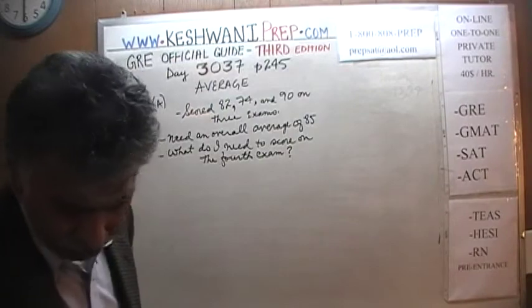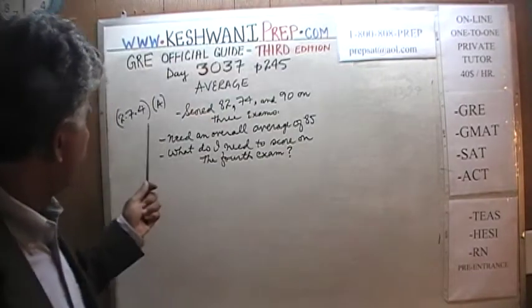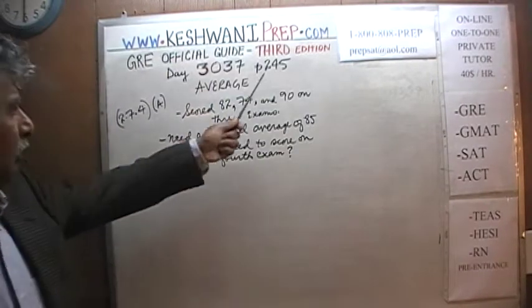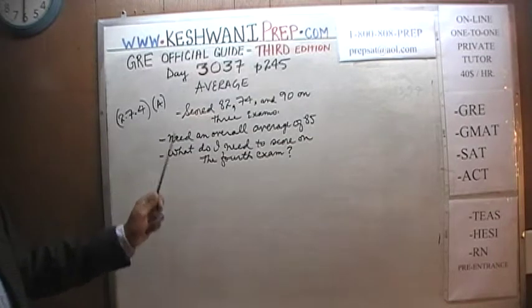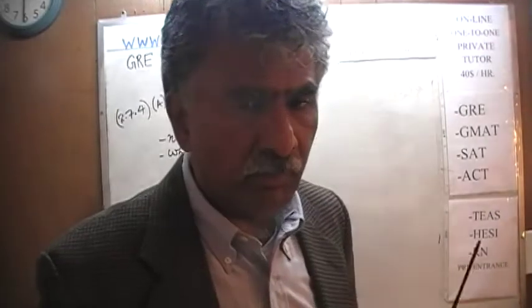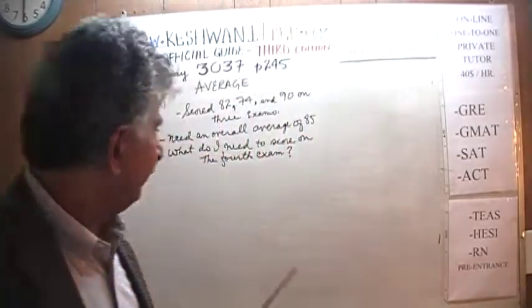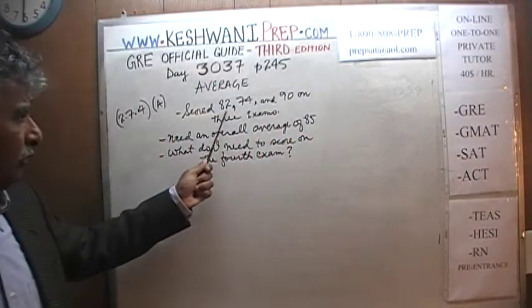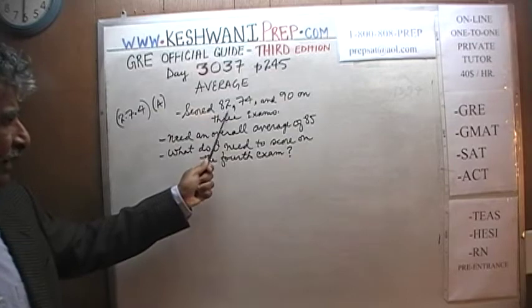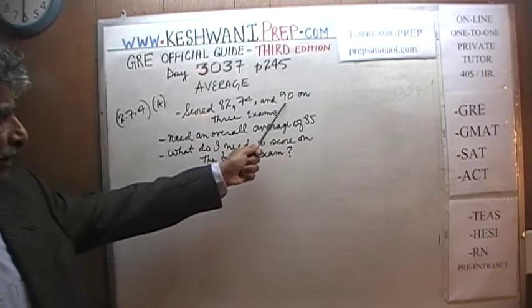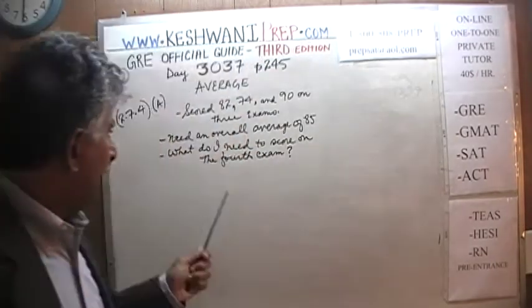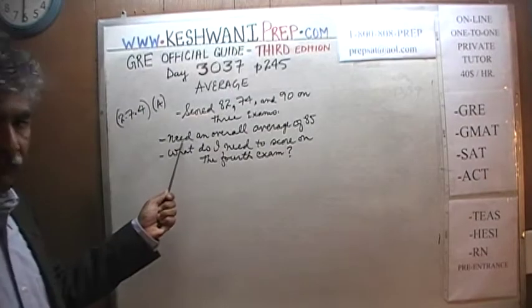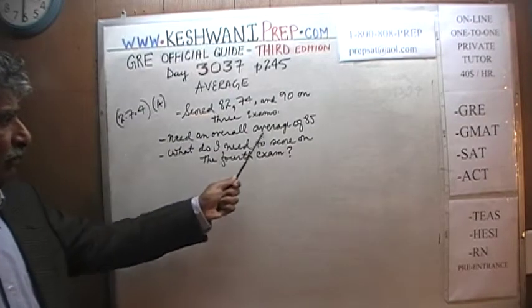Here is the first question from page number 245, problem 2.7.4. We are calling it A because in the book they only give you one; we are going to do three of them: A, B, and C. It says that I scored 82, 74, and 90 on three exams that I have just taken, and I would like to have an overall average of 85.